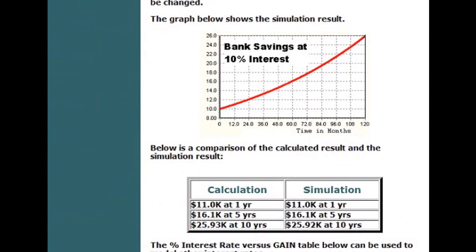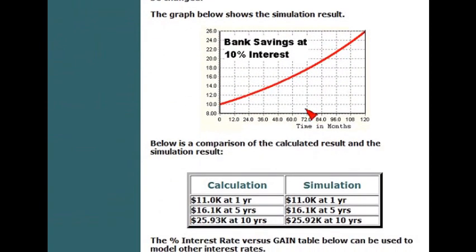And here's a simulation result. Bank savings at 10% interest. And this is the calculated, and this is the simulation result. And we get at one year, we get 11K in the simulation prediction numbers that are very, very accurate.